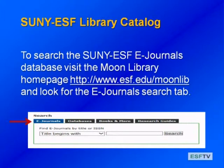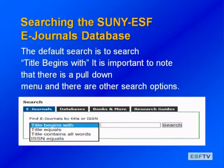To search the e-journals database, e-journals is actually the default search, and it has a default search of 'find titles that begin with.' But there's more than just that default search. It's important to click the pull-down menu when you get into that search box. There are four ways that you can search our e-journals database, and we're going to walk through all four.